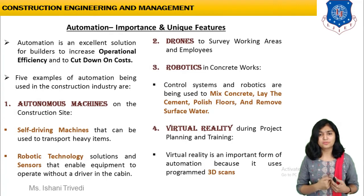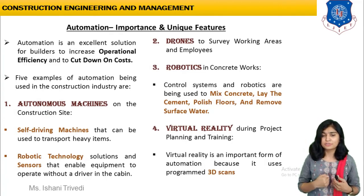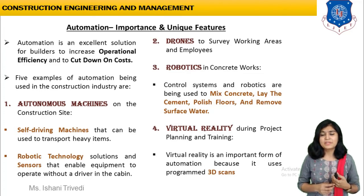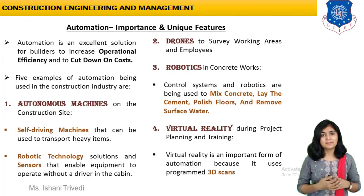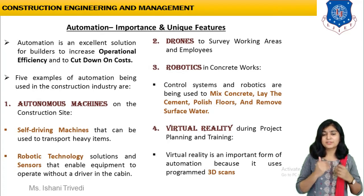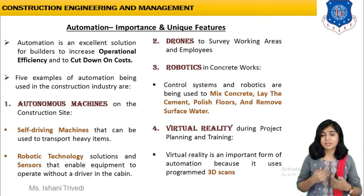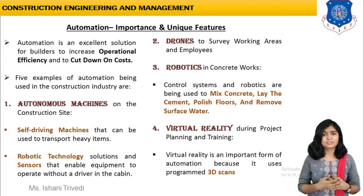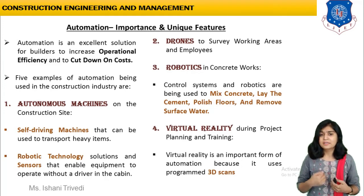We have autonomous machines — automatic, self-driving machines and robotic technology machines in which sensors are mounted. A self-driving machine means that for a power shovel or excavator, you can have an autonomous machine that is self-driving and manpower will not be required. There is one drawback: labor work will be reduced, but in place of that you can have skilled labor to achieve this type of work, so it will be balanced.